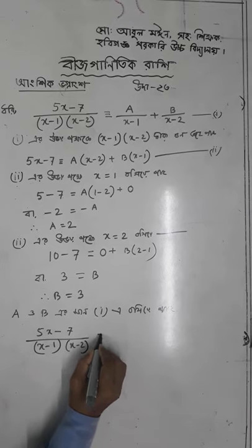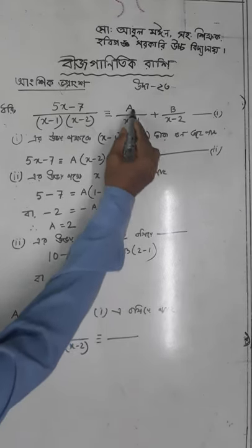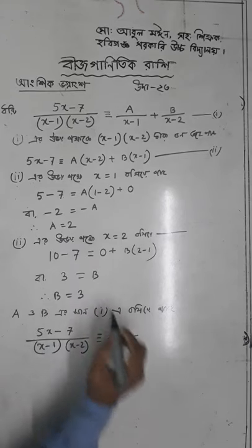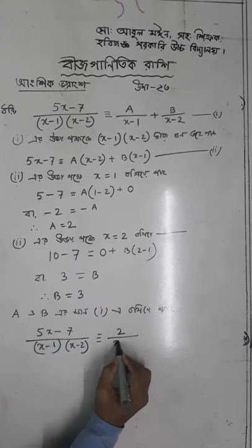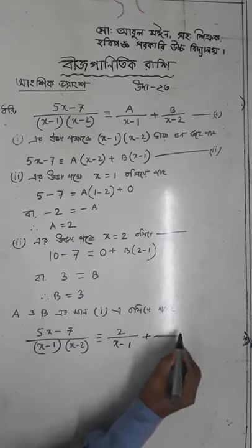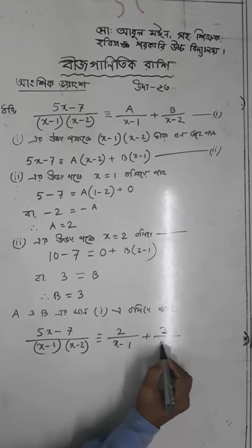So, A is minus 2 by x minus 1 plus B is 3 by x minus 2.